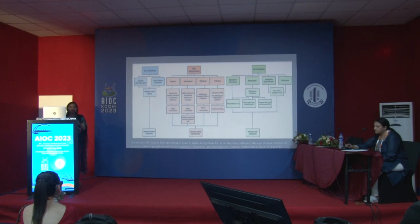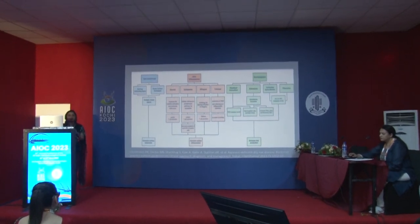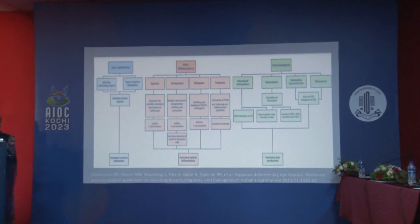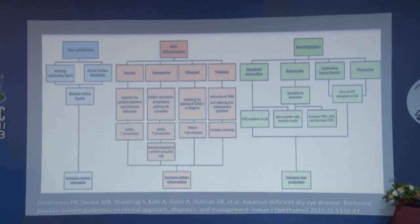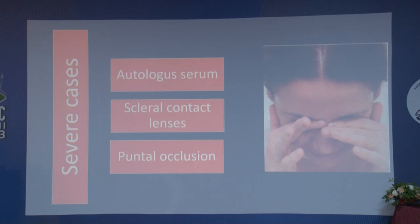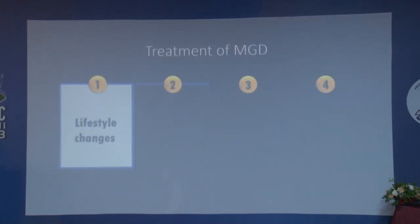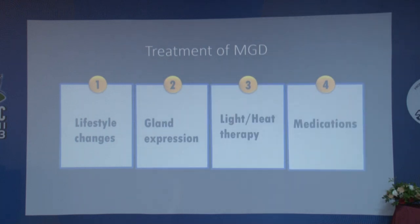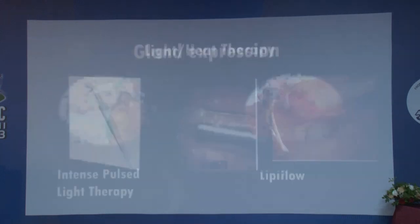Regarding treatment — it is not always just about lubrication with tear substitutes. We must address inflammation of the ocular surface. Anti-inflammatory drugs include steroids as first-line, but they cannot be used long-term, so cyclosporine and tacrolimus come to aid when withdrawing steroids. Secretagogues are under study. In severe cases, autologous serum, scleral contact lenses, and punctal occlusion are options. For MGD: lifestyle changes, gland expression, IPL, LipiFlow, and medications are available.